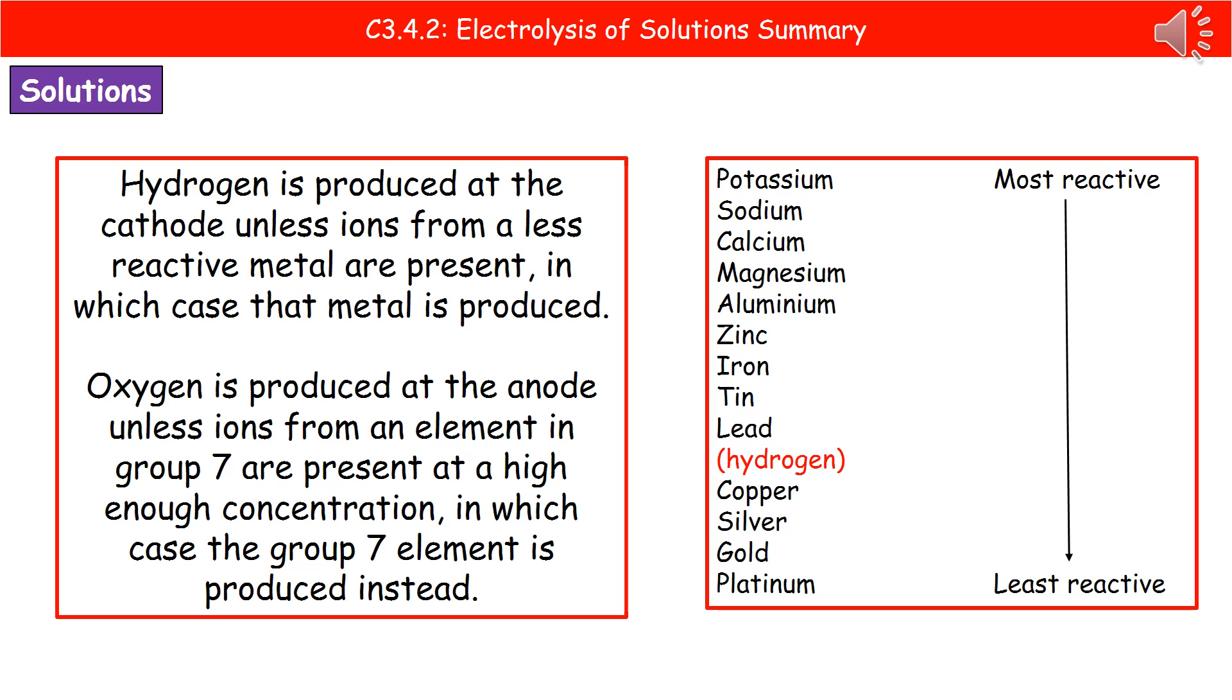If copper, silver, gold, or platinum are present in our solution, those metals form at the cathode. If we have any metals above hydrogen, then hydrogen forms at the cathode. Instead of learning the entire reactivity series, just remember: copper, silver, gold, and platinum form at the cathode; anything else means hydrogen forms at the cathode.